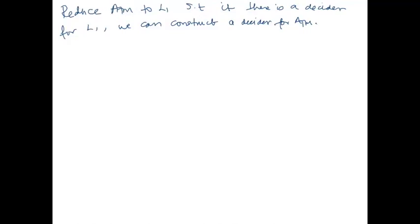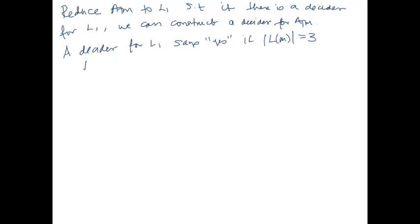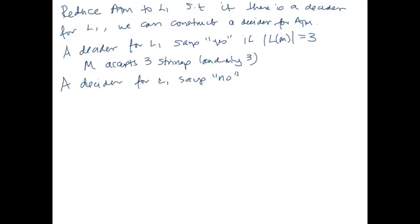What does a decider for L1 do? The decider for L1 says yes if the size of the language of M is 3 — meaning that M accepts exactly three strings and only three. Similarly, a decider for L1 says no if M accepts 0 to 2 or 4 or more strings.